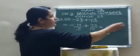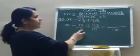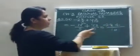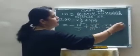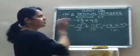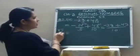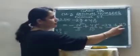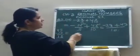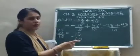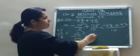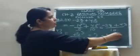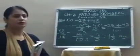Take the LCM of 5 and 10, which is 10. 5 twos are 10, so minus 14 into 2 becomes minus 28. 10 ones are 10, so 43 ones are 43. Now minus plus is minus, so you subtract: 43 minus 28. The sign of the bigger number 43 is plus, so the answer is 15 upon 10. Reduce to lowest terms: 5 threes are 15, 5 twos are 10, so it becomes 3 upon 2, that means 1 whole number 1 upon 2. This is the answer to part 4 of question number 2.